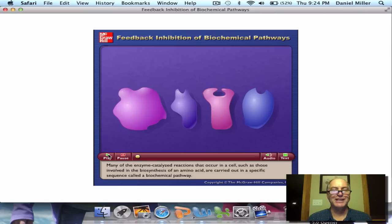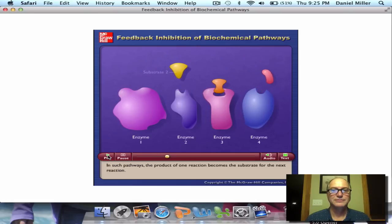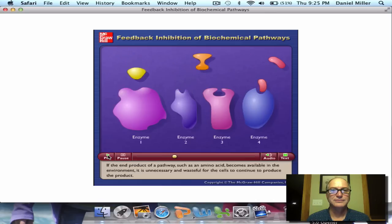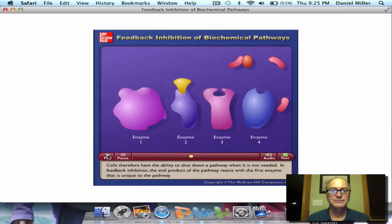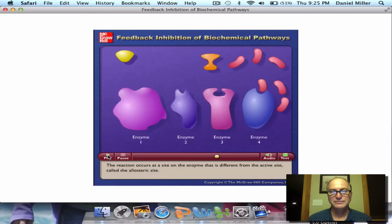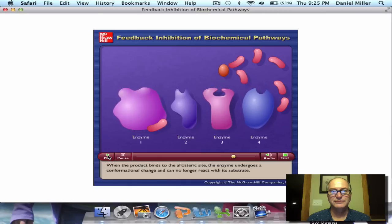Let's take a look at an example of feedback inhibition in action. Many of the enzyme-catalyzed reactions that occur in a cell, such as those involved in the biosynthesis of an amino acid, are carried out in a specific sequence called a biochemical pathway. In such pathways, the product of one reaction becomes the substrate for the next reaction. If the end product of a pathway, such as an amino acid, becomes available in the environment, it is unnecessary and wasteful for the cells to continue to produce the product. Cells, therefore, have the ability to shut down a pathway when it is not needed. In feedback inhibition, the end product of the pathway reacts with the first enzyme that is unique to the pathway. The reaction occurs at a site on the enzyme that is different from the active site, called the allosteric site. When the product binds to the allosteric site, the enzyme undergoes a conformational change and can no longer react with its substrate. There is no substrate for subsequent steps in the pathway, and the final product is no longer synthesized.